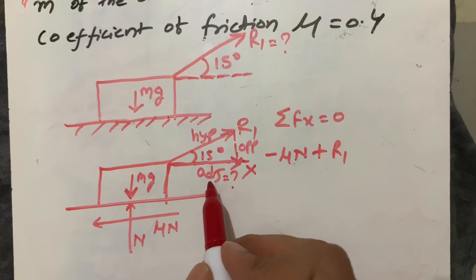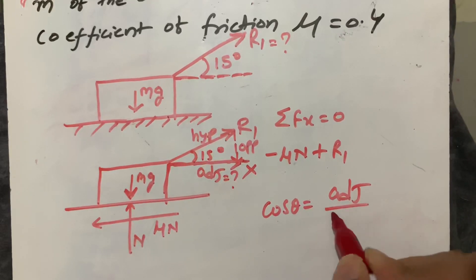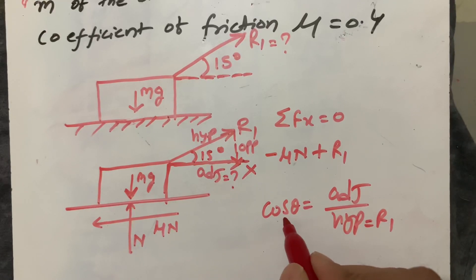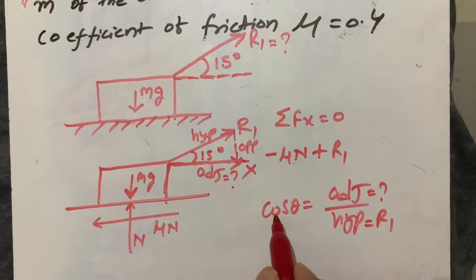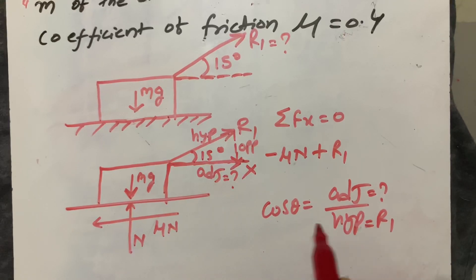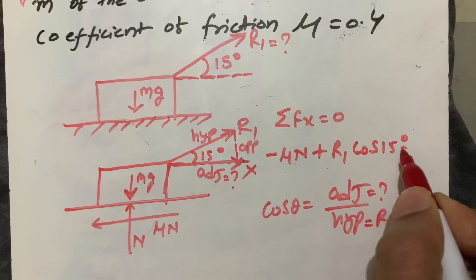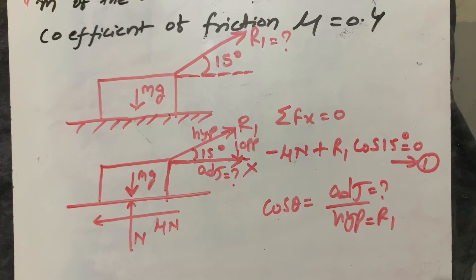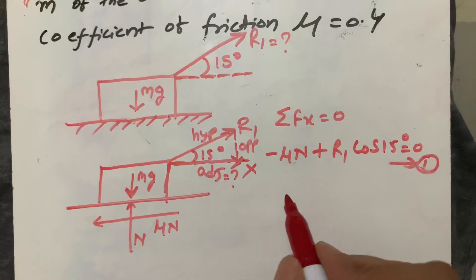We know the formula cos θ = adjacent side / hypotenuse. The hypotenuse is R1, so the x-component becomes R1 cos θ, that is R1 cos 15°. This is equation number one: -μN + R1 cos 15° = 0.